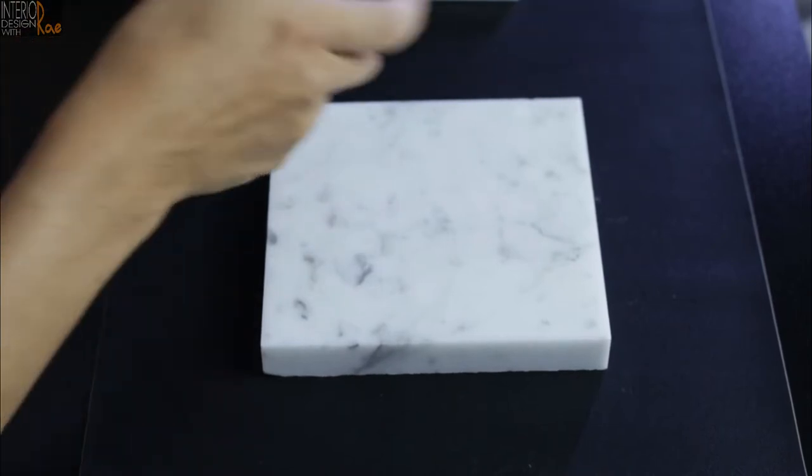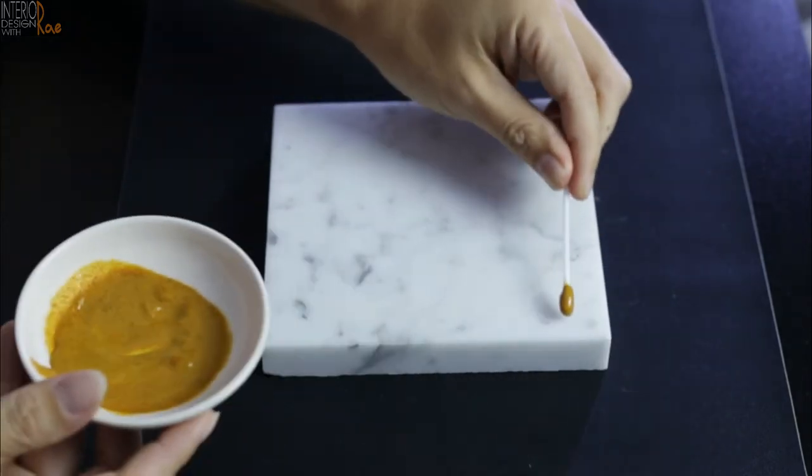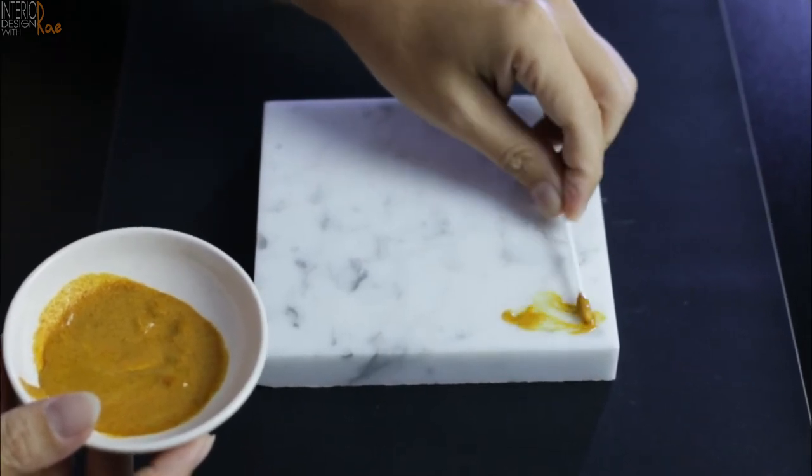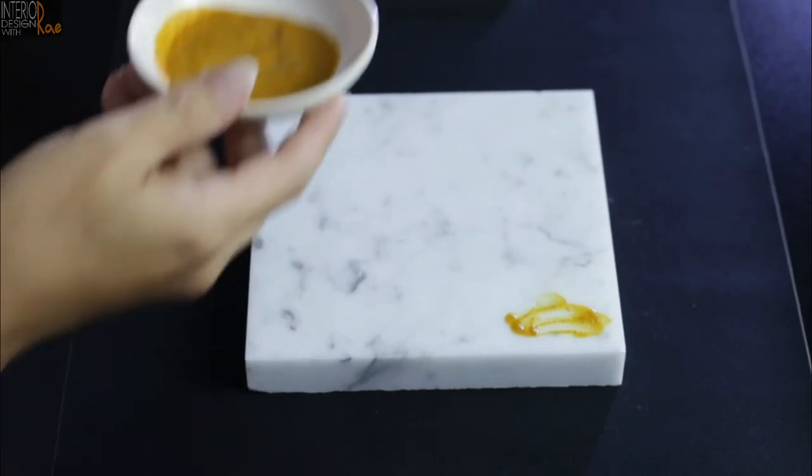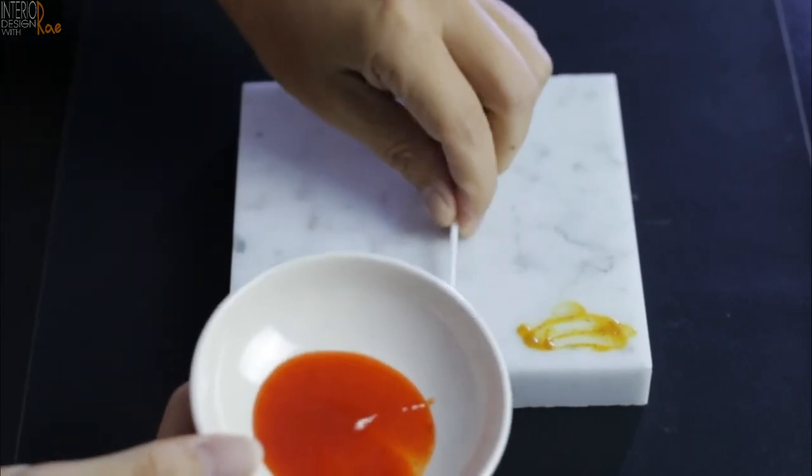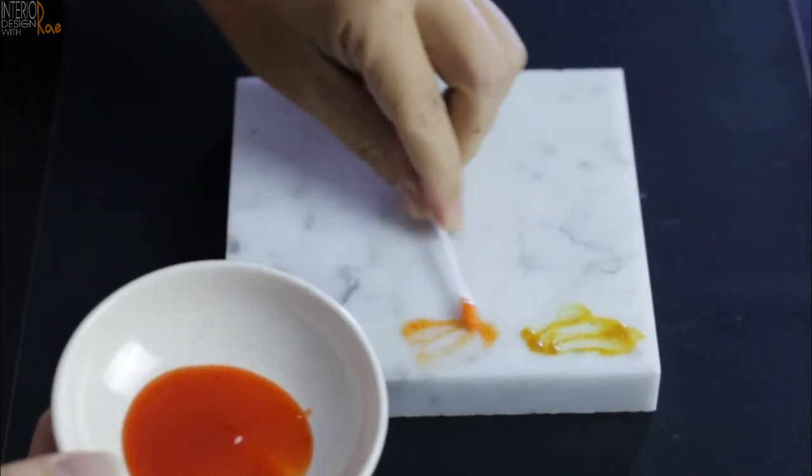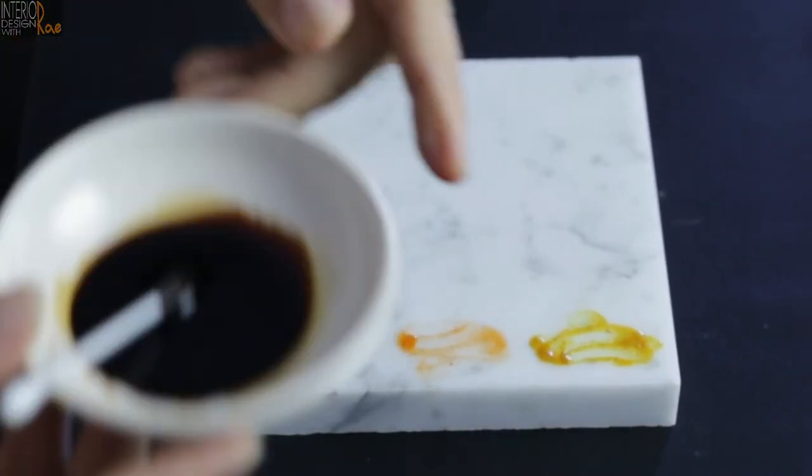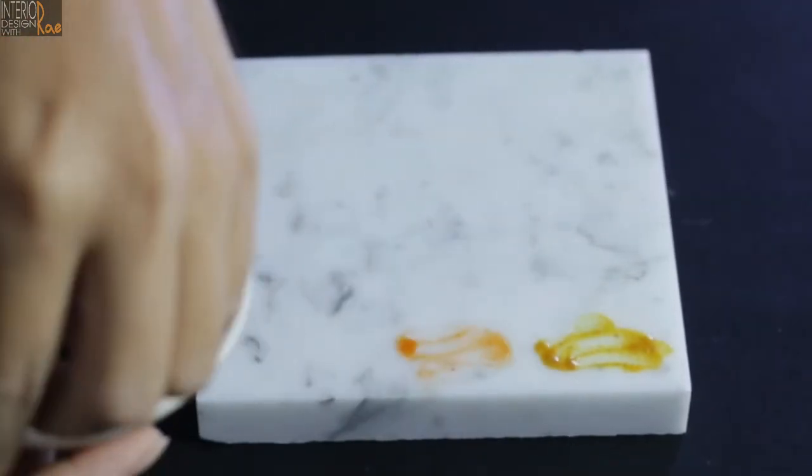So let's start. I made some very thick curry sauce, it's quite yummy. Just put it here, spread it at the corner. And then a little bit of chili sauce, let's put it here. And real dark soy sauce.